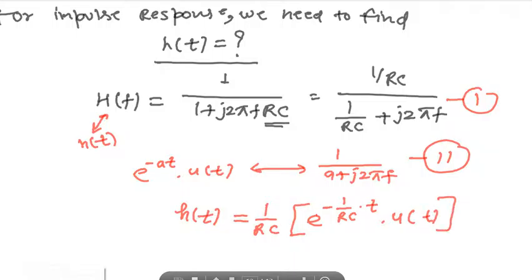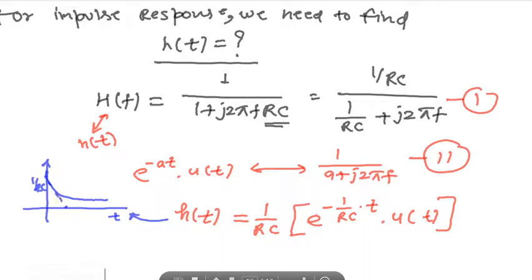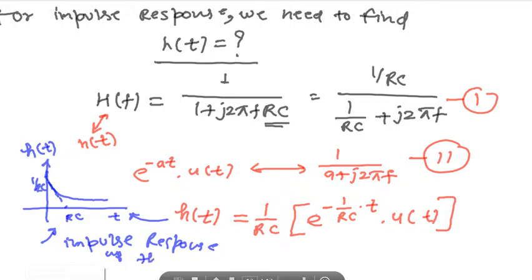The graph of h(t) shows that at t = 0, the value is 1/RC, and it decays exponentially. The time constant is RC. This is the impulse response of the RC low-pass filter system.